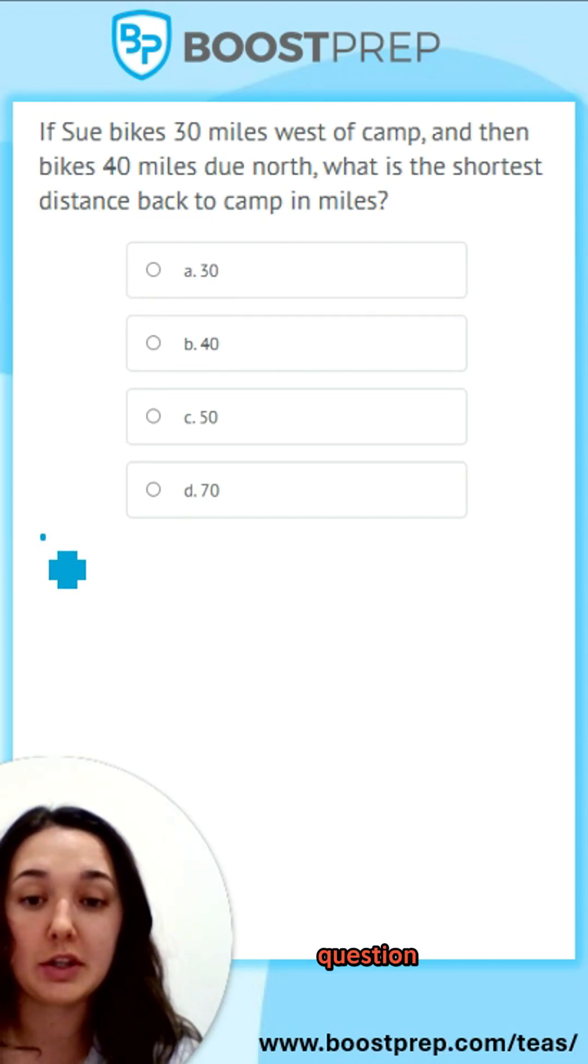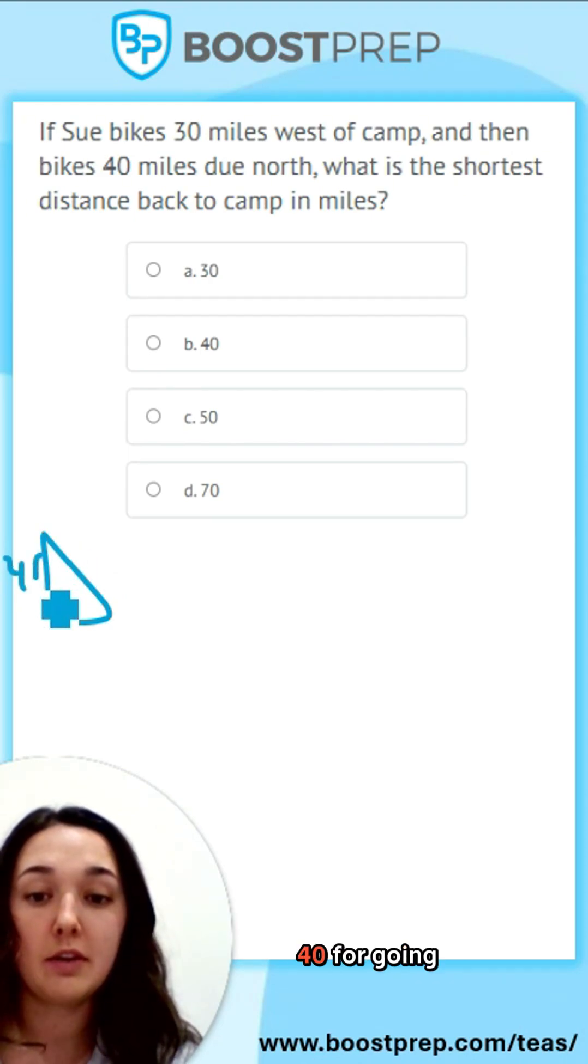So for this question, you would want to draw your triangle here. This is the 40 for going north, 30 for going west, and then you want to solve for C.